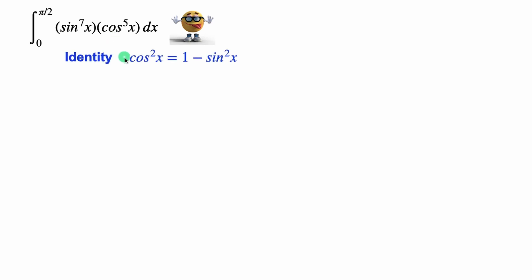So we're going to use the common identity cos squared equals 1 minus sine squared. Now we don't have cos squared here, so we're going to square this identity to get cos to the power of 4 equals 1 minus sine squared squared, and if we substitute that in, this is what we got right here.